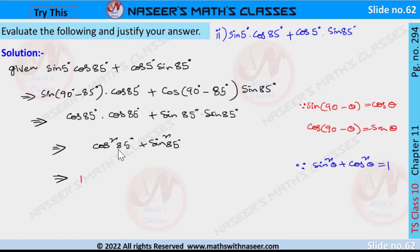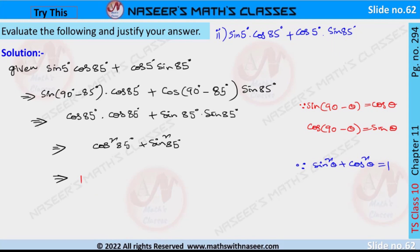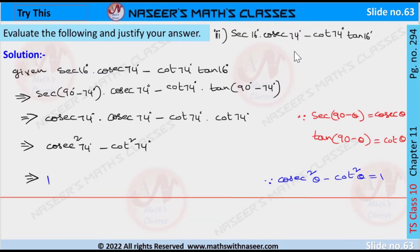This can be written as cos²85° + sin²85°, which is in the form of the identity sin²θ + cos²θ = 1. Therefore sin 5° cos 85° + cos 5° sin 85° is equal to 1. Now we solve the third problem: sec 16° cos 64° − cot 74° tan 16°.